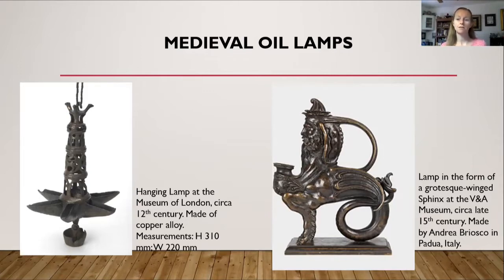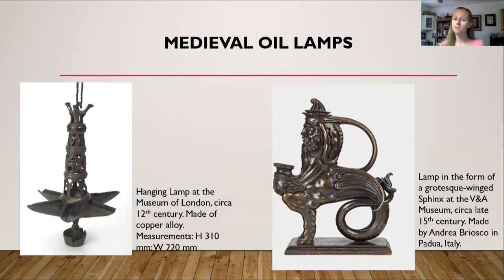The lamp on the right is of a winged sphinx at the V&A Museum, from about the late 15th century. It was made by Andrea Riosco in Padua, Italy. But even though we know oil lamps did exist, they were not the most popular after the Roman time period.